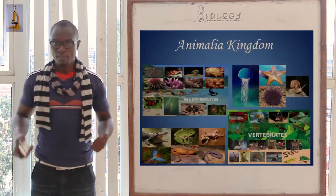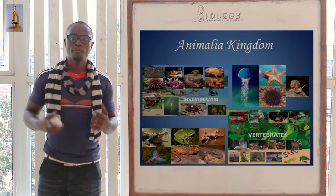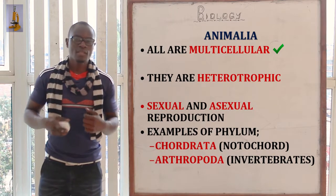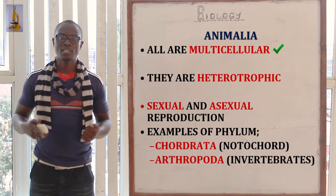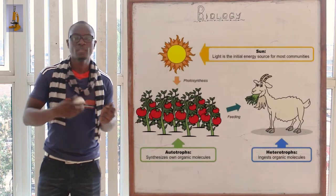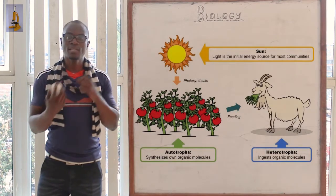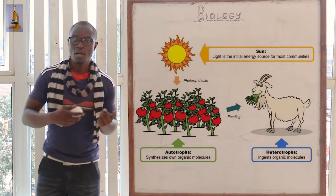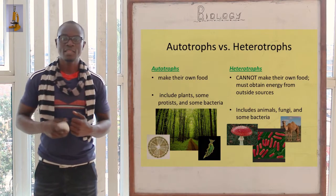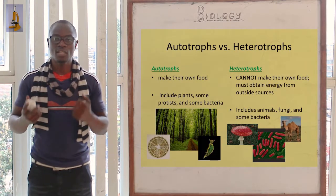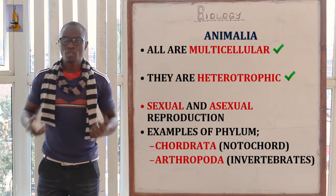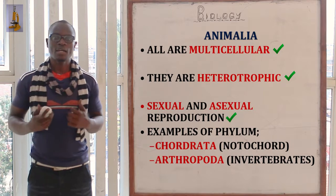The next one is kingdom Animalia. Kingdom Animalia mainly comprises of multicellular organisms. The organisms under kingdom Animalia are heterotrophic. In plants they are autotrophic, while in animals they are heterotrophic. Heterotrophic means that they look for their own food and take in complex food materials. These organisms also reproduce sexually and asexually.